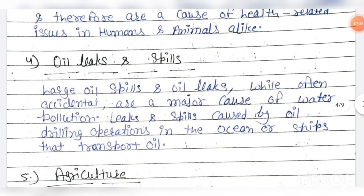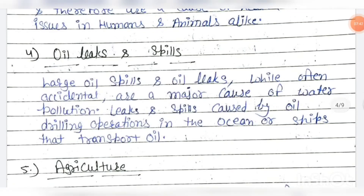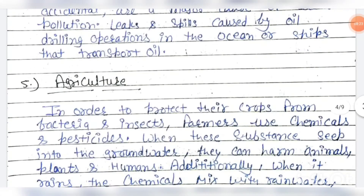The fourth cause is oil leaks and spills. Large oil spills and oil leaks, often accidental, are a major cause of water pollution. Leaks and spills are caused by oil drilling operations in the ocean and ships that transport oil. Sometimes accidentally, oil falls into the water — into oceans, seas, and rivers — causing water pollution. Similarly, drilling for gases and oils in mountains can lead to accidents where substances reach the surface and cause water pollution.